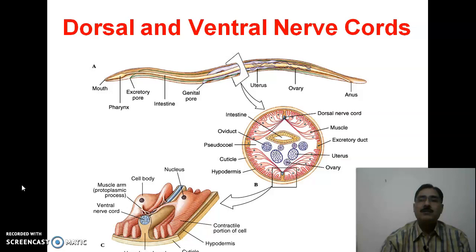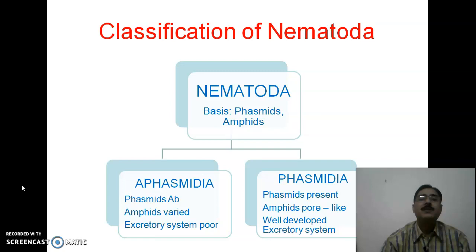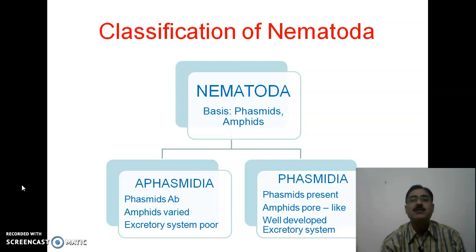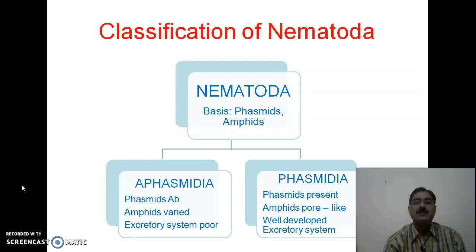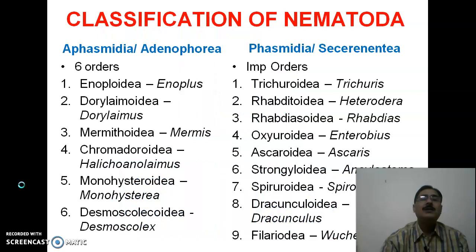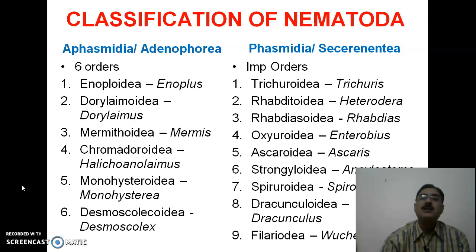These structures show the dorsal and ventral nerve cord. Now the classification: the nematode phylum has been classified on the basis of certain sensory organs — phasmids and amphids. If phasmids are present, we call it Phasmidia; if absent, we call it Aphasmidia. If amphids are pore-like it is Phasmidia, and if amphids are of varied form it is Aphasmidia. In Aphasmidia the excretory system is poorly developed, while in Phasmidia they have a well-developed excretory system.